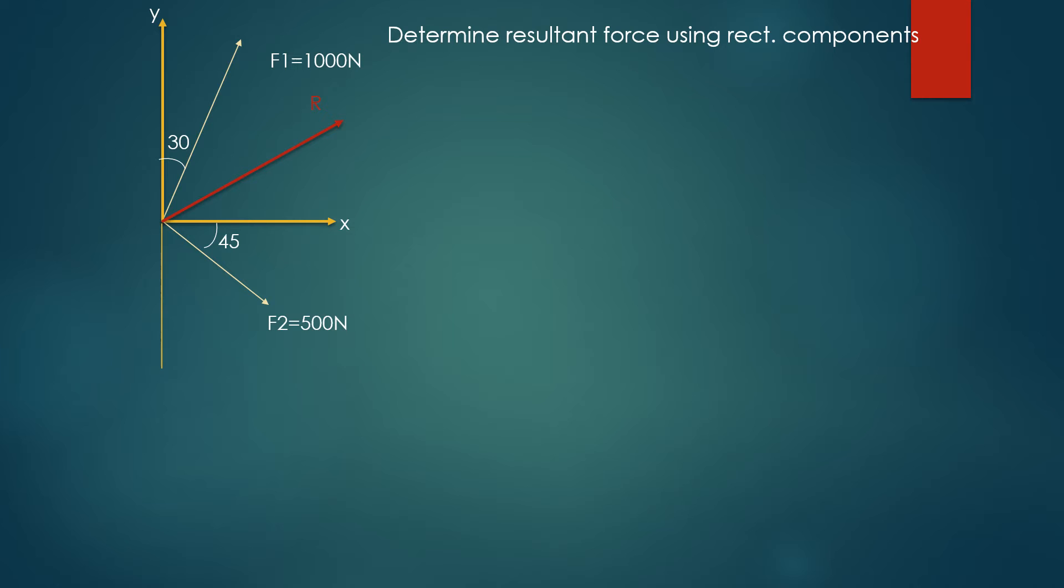F1 is 1000 N and F2 is 500 N. F1x equals force F1 times sine 30 degrees, or cosine of 60 degrees. Since 30 and 60 make complementary angles, this equals 1000 newtons times sine 30, which is 0.5, giving 500 N.